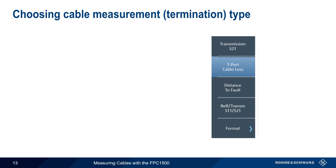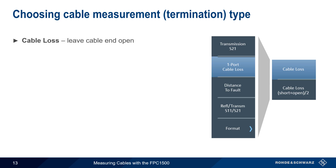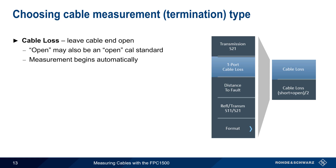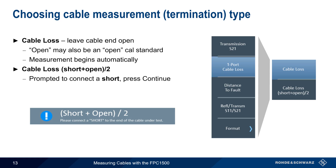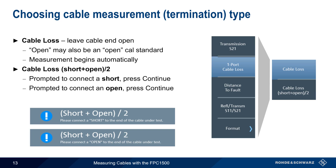The next step is choosing the cable measurement or termination type. If we choose Cable Loss, then the end of the cable should be left open or unterminated. Note that an open may also be created by attaching an open calibration standard. This type of cable loss measurement begins automatically. If we choose Cable Loss Short Plus Open Divided by 2, the cable will be measured twice – once with a short and once with an open. Attach a short when prompted and press Continue, and then leave the cable open or connect an open when prompted and press Continue again. After the process is completed, the results will be displayed.